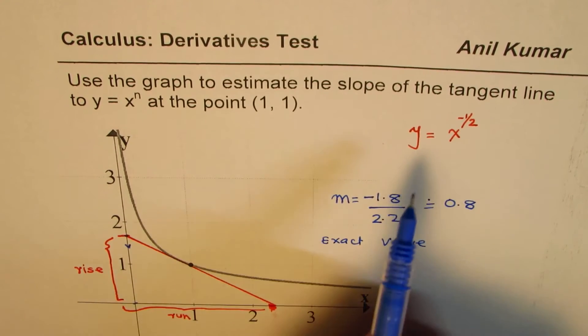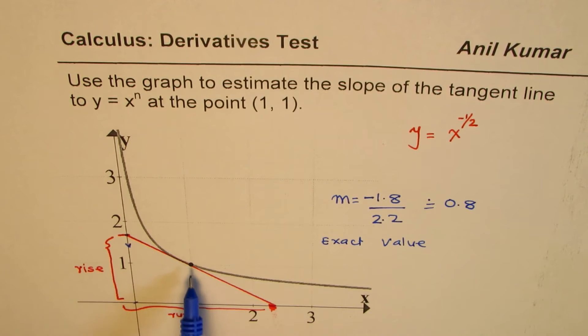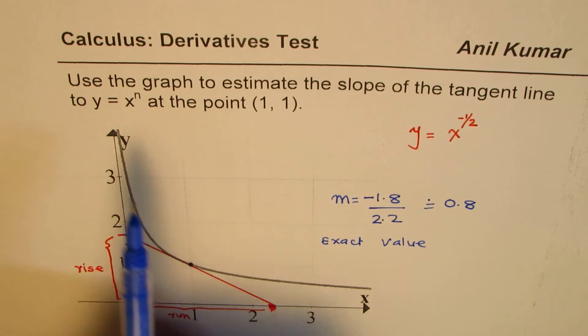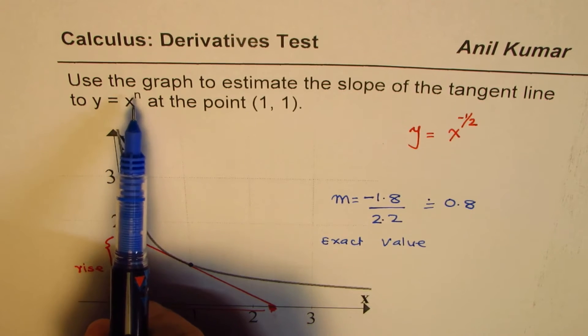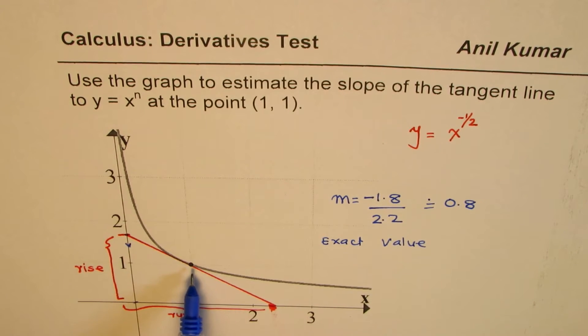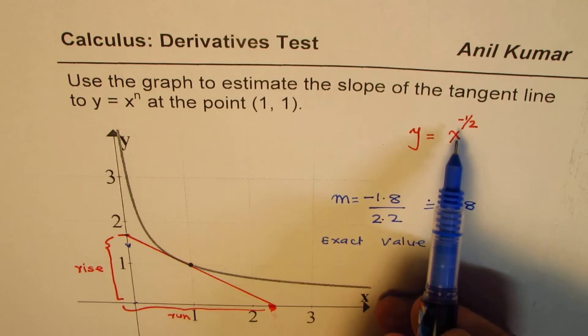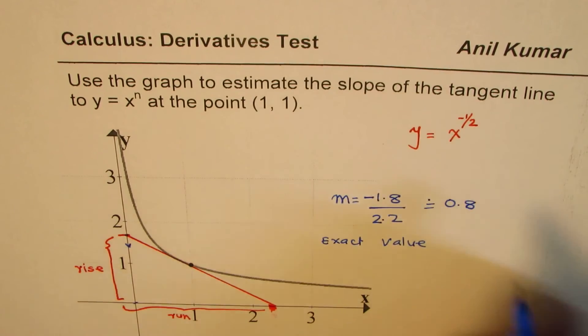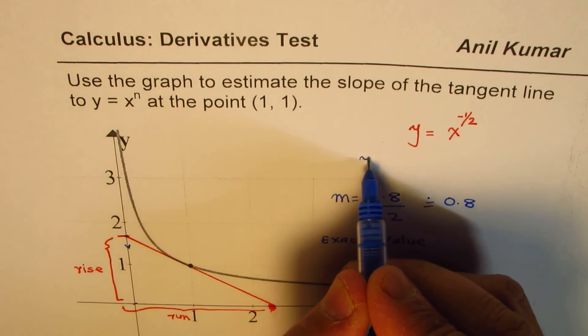That is my suggestion, but of course to get exact value what you can really do is you can use this function because you can first find the equation of the line. It has been suggested that y equals x to the power of n, and it seems to be a graph which matches y equals x to the power of minus half.